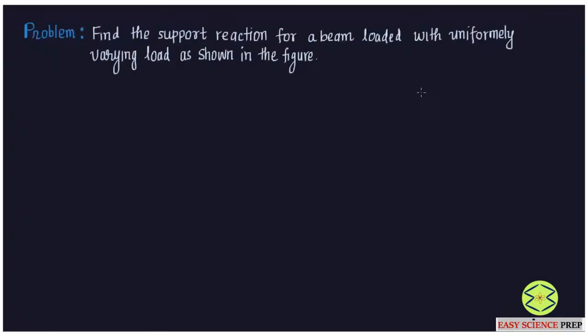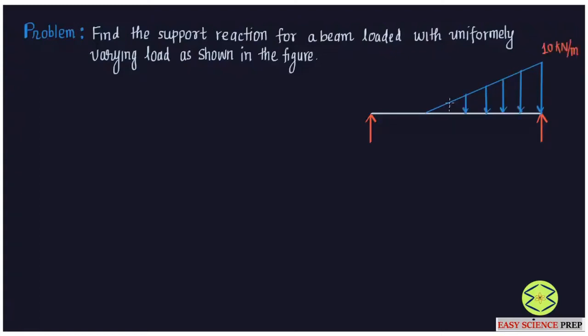Welcome friends. Today we are going to solve a problem based on uniformly varying load. We have a beam with an overall span length of 8 meters. The beam is simply supported, with support points A and B, and it carries a uniformly varying load of 10 kilonewton per meter.